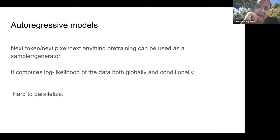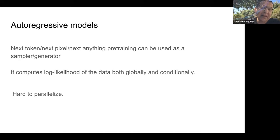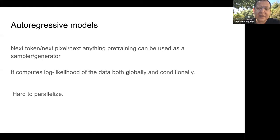These are called autoregressive models. They can be used not just for sampling and generating data, but also to compute a log-likelihood of the data — so you can use them even as outlier detectors. But there's a big problem: they're hard to parallelize. Generating images this way requires a lot of compute. It produces very high quality outputs, but it's much more expensive to run than a convolutional network like in a GAN.